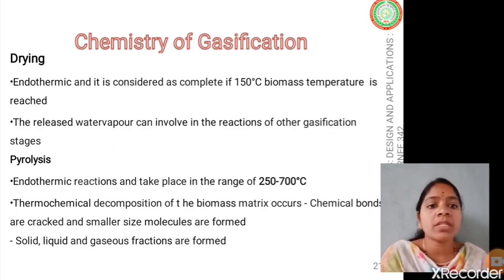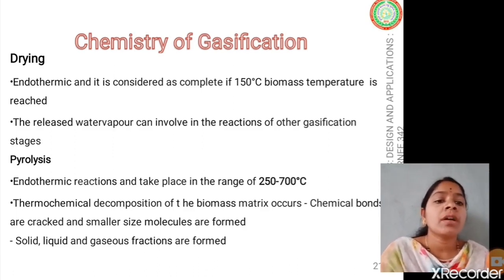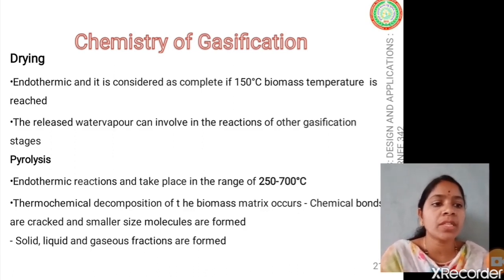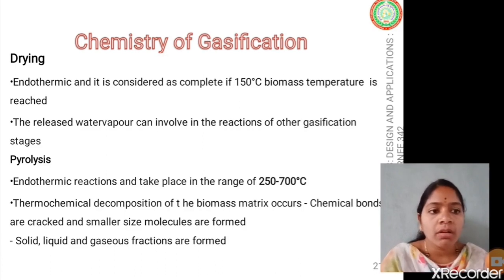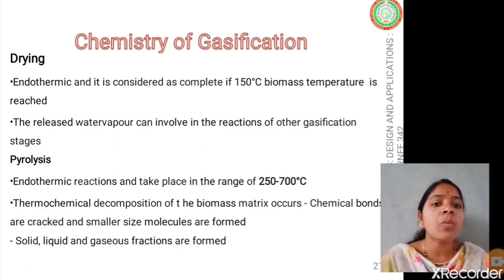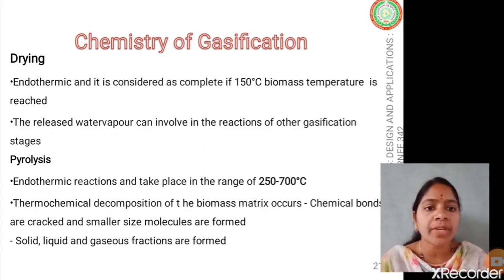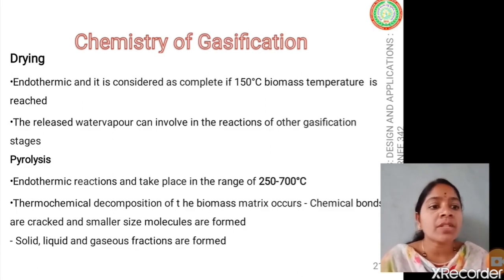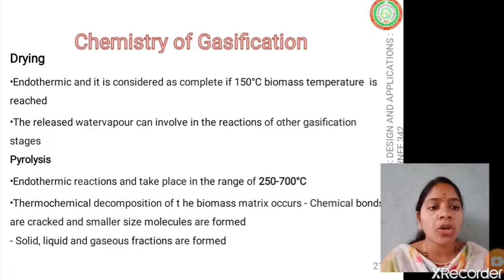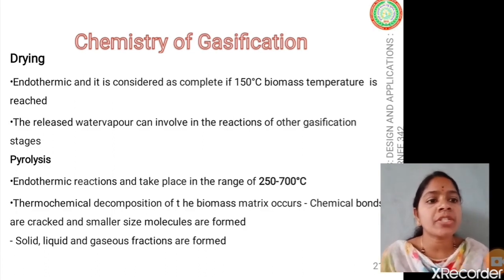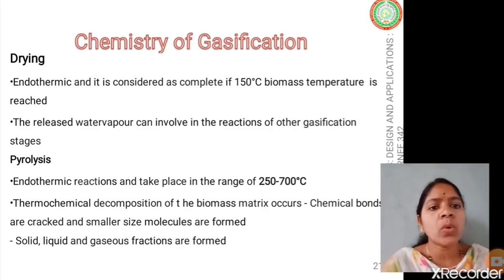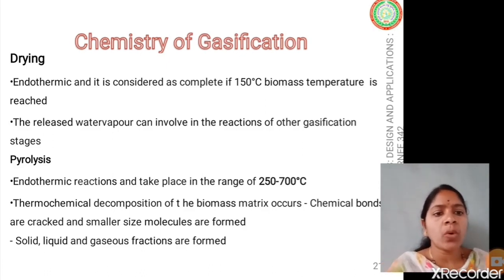The second stage is pyrolysis, which occurs in complete absence of oxygen. Thermal degradation or decomposition of the biomass takes place: chemical bonds are broken and the biomass is decomposed, releasing some gases and smaller molecules — mainly carbon dioxide, carbon monoxide, some heat, and water molecules. This endothermic process occurs at around 250 to 500°C and can extend to 700°C.